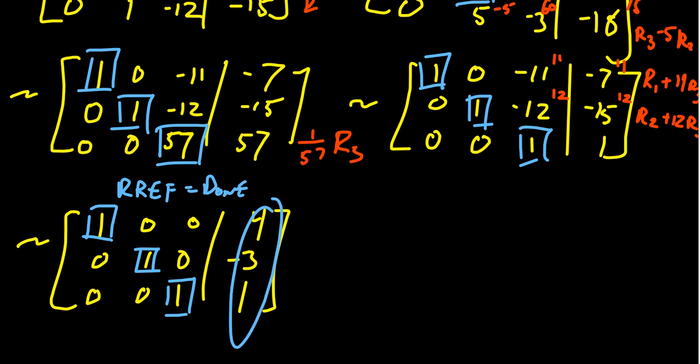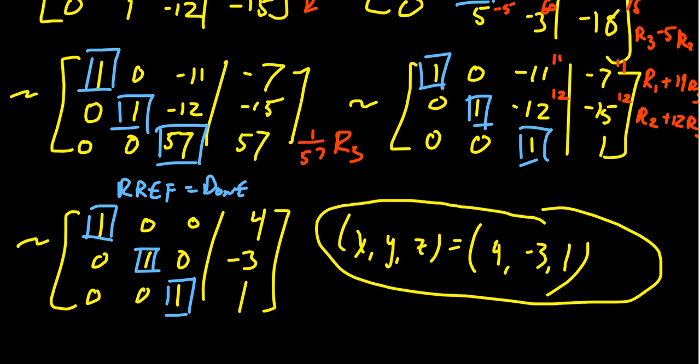Now we have to interpret our solution. The final solution to this problem is that x, y, and z need to be 4, -3, and 1. That is, x equals 4, y equals -3, and z equals 1. That'll be the only solution to this system of linear equations.